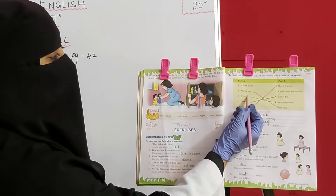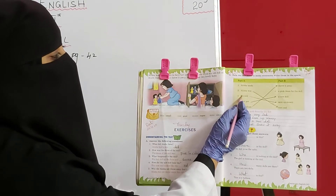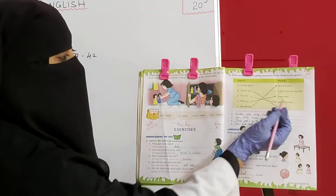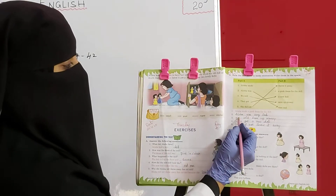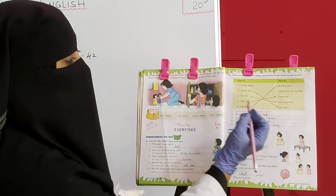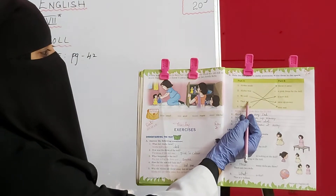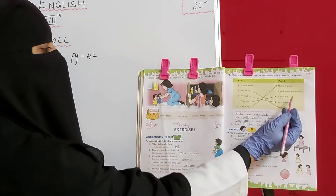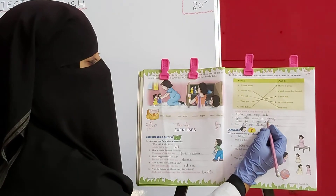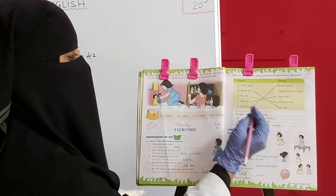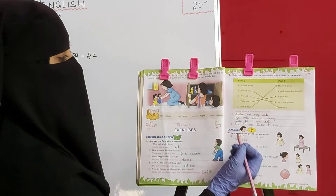Then third one: We will — kya sentence form hua tha? We will save up money. Toh aapko sentence yahaan likhna hai: We will save up money. Fourth one: They got a new doll. Aap yahaan likhna hai: They got a new doll. Then: She did not throw it away.